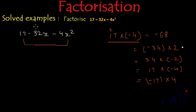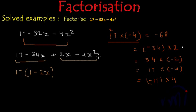So this polynomial can be written as 17 minus 34x plus 2x minus 4x square. And now if we see these two sets of terms properly, from here if we take 17 as common inside the bracket we will have 1 minus 2x, and from the second group of terms if I take plus 2x common again we are going to get 1 minus 2x inside the bracket.